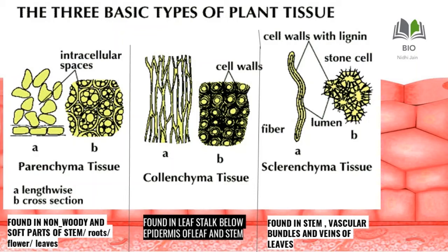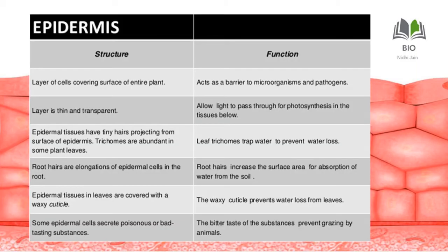Root hairs are elongations of epidermal cells in the root. Epidermal tissue on leaves is covered with a waxy cuticle — a protective, waxy layer. In conditions like Rajasthan where water is scarce, plants have a thick waxy cuticle to stop the loss of water. The plant cannot afford to lose water, so the cuticle conserves it. Some epidermal cells also secrete poisonous or bad-tasting substances.